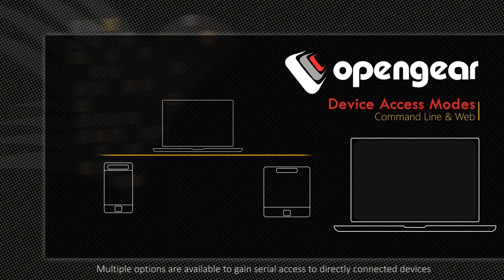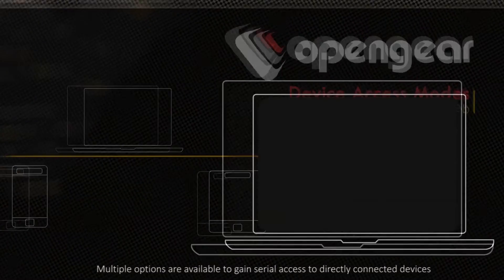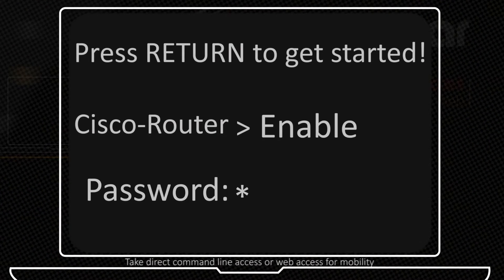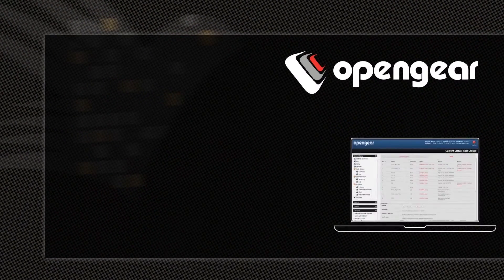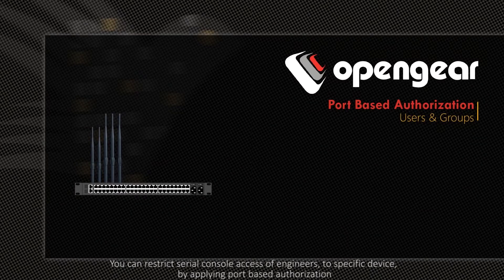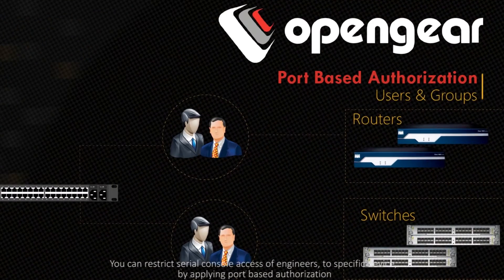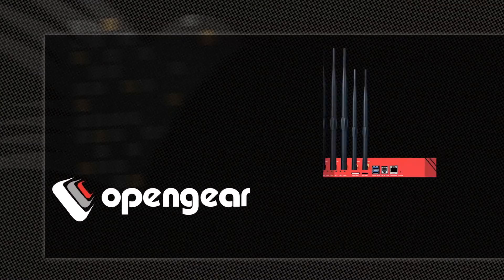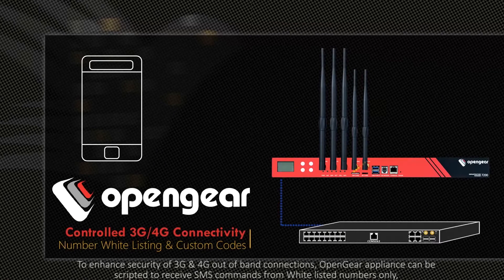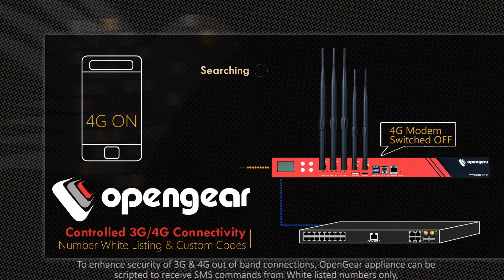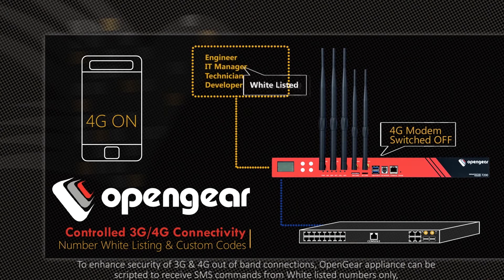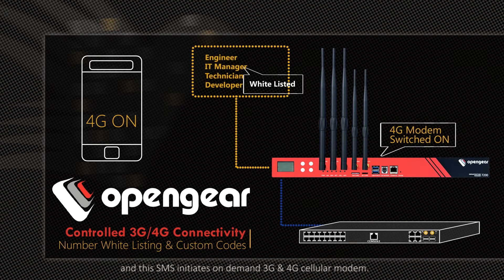Multiple options are available to gain serial access to directly connected devices — take direct command line access or web access for mobility. You can restrict serial console access of engineers to a specific device by applying port-based authorization. To enhance security of 3G and 4G out-of-band connections, the Open Gear Appliance can be scripted to receive SMS commands from whitelisted numbers only, and this SMS initiates on-demand 3G and 4G cellular modem activation.